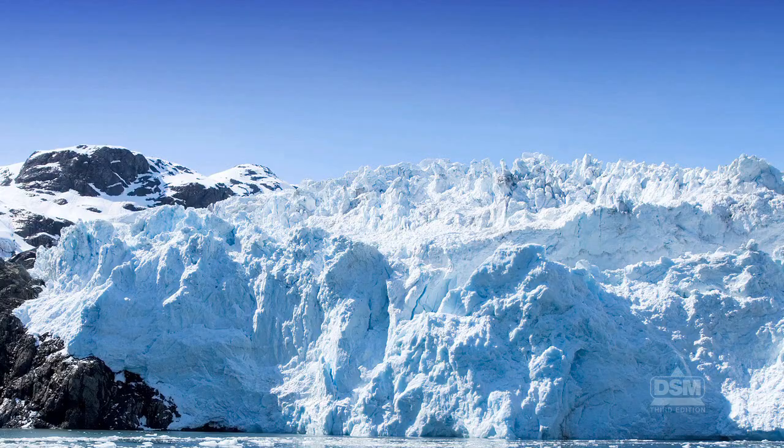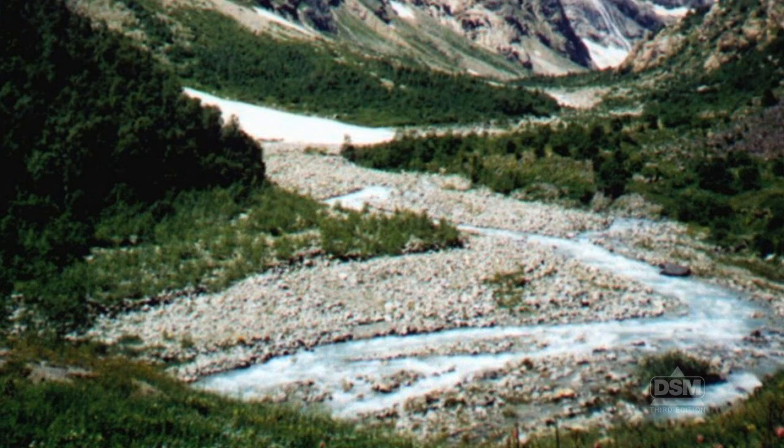Go on to explain that as the glacier moves through a valley, the ice dislodges rocks and soil, literally carving a path down the slope.